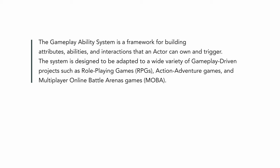So what is the Gameplay Ability System? According to Epic Games, the Gameplay Ability System is a framework for building attributes, abilities and interactions that an actor can own and trigger. The system is designed to be adapted to a wide variety of gameplay-driven projects, such as role-playing games, action-adventure games and multiplayer online battle arena games. It's a plugin that ships with Unreal Engine and supports out-of-the-box multiplayer with client-side prediction. It has proven its worth in big commercial games such as Fortnite and can also help you realize your indie game project.